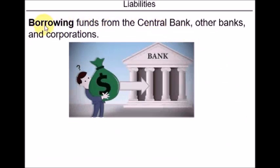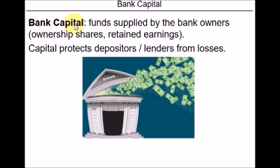Another type of liability for a bank is borrowing. Banks can borrow from the central bank — called central bank loans or discount loans in the US. They can also borrow from other commercial banks, called interbank loans or fed funds in the US. Banks can also borrow from large corporations. Capital is another source of funds supplied by the owners of the bank. Capital can be increased either through a purchase of newly issued shares of the bank or through retained earnings — the part of profit not paid out as dividends but reinvested back into the business.